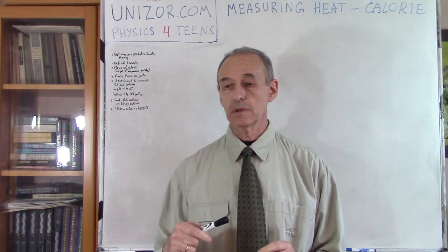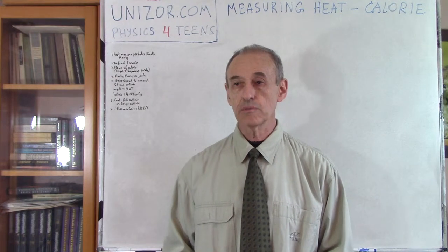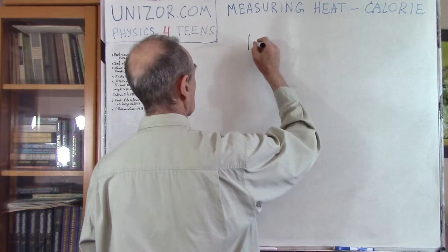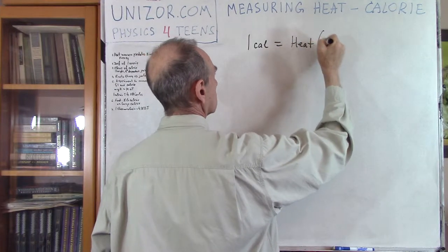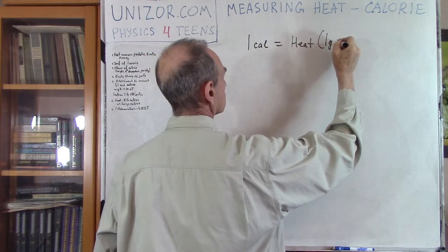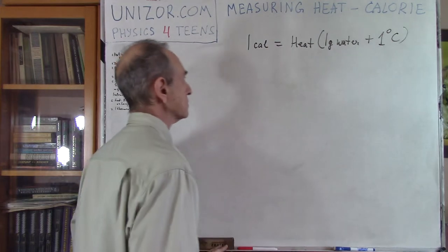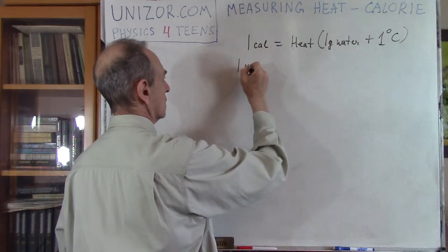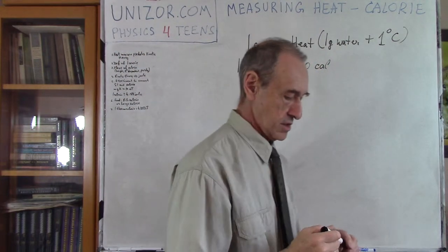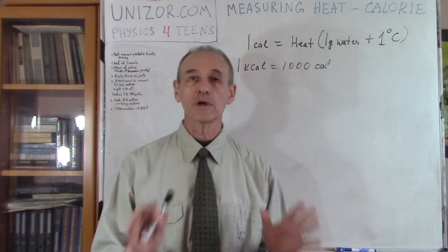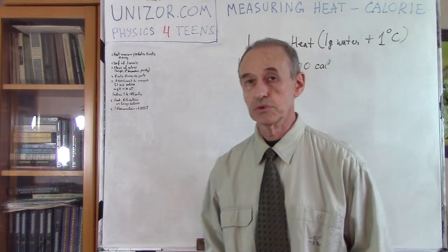There is also another unit — the kilocalorie — which is 1,000 calories. So we have: one calorie equals the amount of heat needed by one gram of water to rise one degree Celsius, and one kilocalorie is 1,000 calories. That was all established long before the kinetic theory of molecular movement was applied to heat.